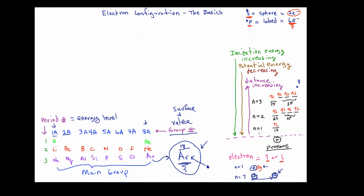So if we were going to take the shell model and simplify it into what we call electron configuration, we would write the notation the following way. We start by writing the energy level 1s, and then that's followed by energy level 2 which has a 2s and a 2p. This is energy level 1, and this is energy level 2. And then for energy level 3 there's going to be the 3s and the 3p — both of these sub-orbitals appearing in energy level 3. How do we utilize electron configuration to represent a particular element, and how do we utilize that configuration to tell which electrons are surface electrons and which ones are core electrons?